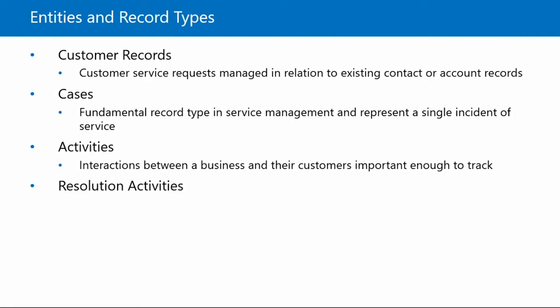We also have activities. Activities are interactions between a business and their customers that are deemed important enough to track within Dynamics 365. As mentioned, activities can be associated with cases as well as other types of records. For example, when looking at all of the activities associated with an account or contact, the user can open the record and find the activities located under closed activities or open activities. Next, we have resolution activities. Once all of the activities regarding a case are resolved, the case itself can be resolved. When the case is resolved, an activity type named resolution activity is created. This activity is found only in the closed activities associated with the case and displays all of the case's resolution details as well as how much time was spent on the case.